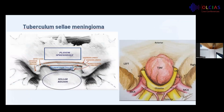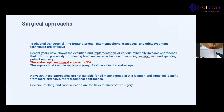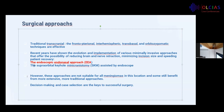I will tell you about tuberculum sellae meningioma. Surrounding important neurovascular structures is one of the difficulties of treatment. While traditional transcranial techniques have proven effective in removing this tumor — such as frontopterional, anterohemispheric, transbasal, and orbitosygomatic approaches — recent years have shown the evolution of various minimally invasive approaches that offer the possibility of reducing brain and nerve retraction, minimizing incision size, and speeding patient recovery.